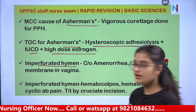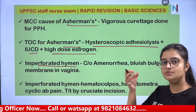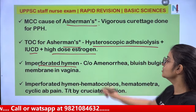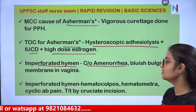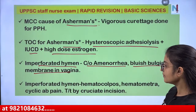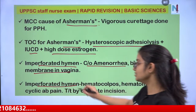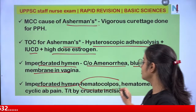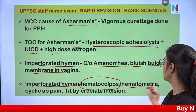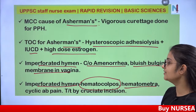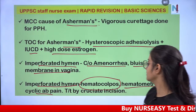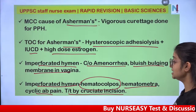In imperforated hymen, the hymen is not perforated so menstrual blood cannot flow out, causing amenorrhea. The patient will have cyclic abdominal pain and a bluish bulging membrane in the vagina due to hematocolpus (blood-filled vagina) and hematometra (blood-filled uterus). Treatment is cruciate incision.